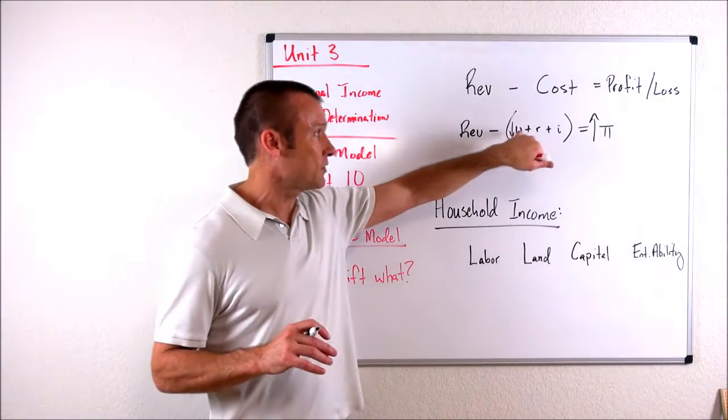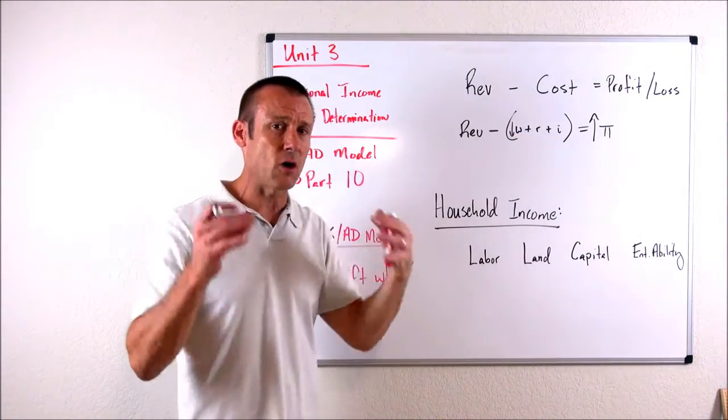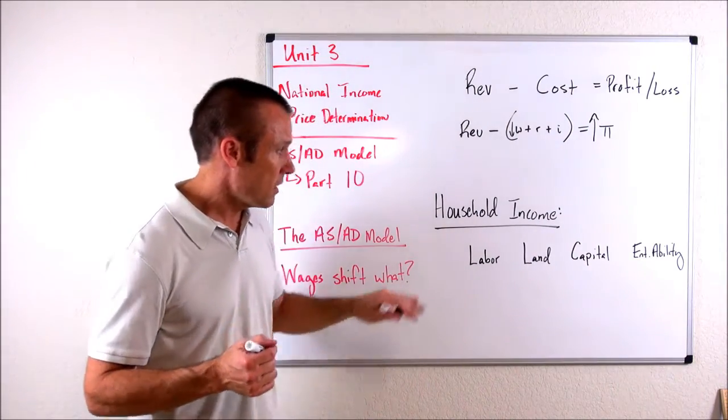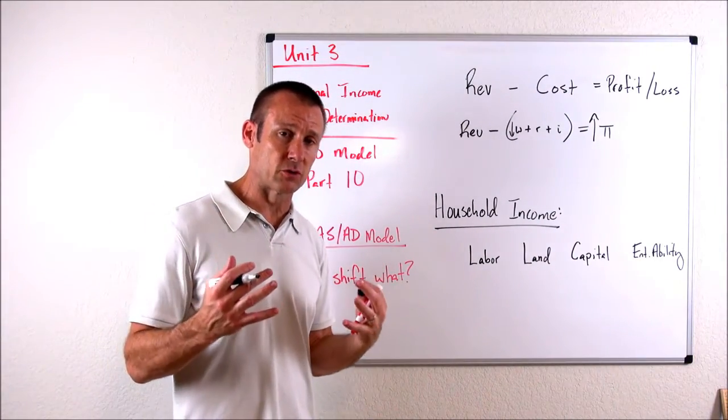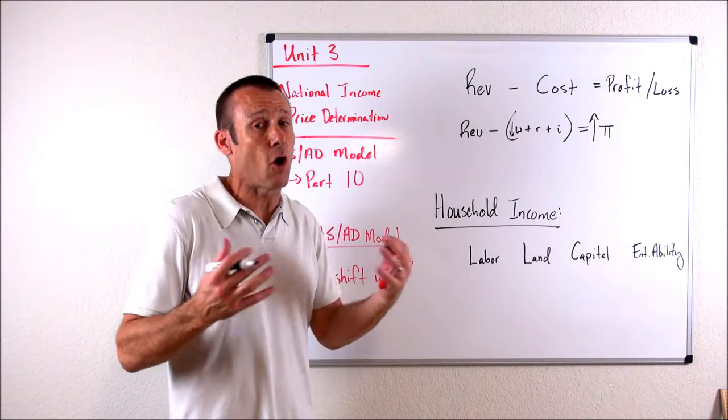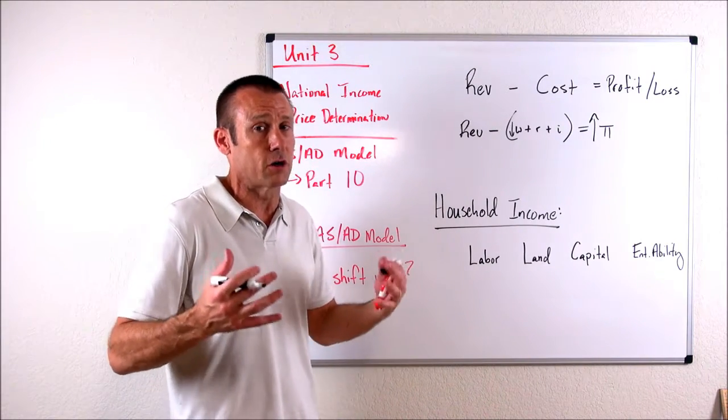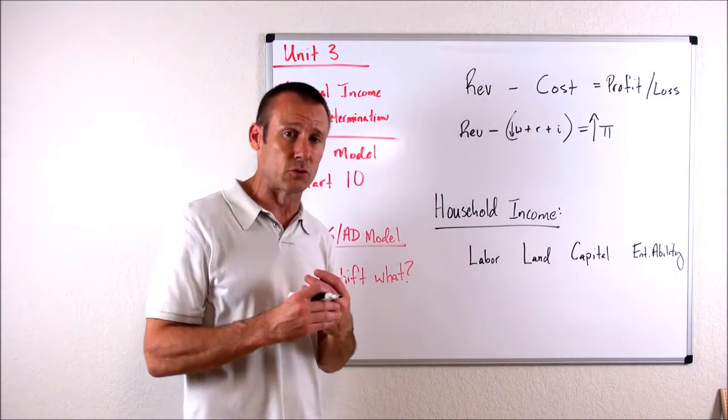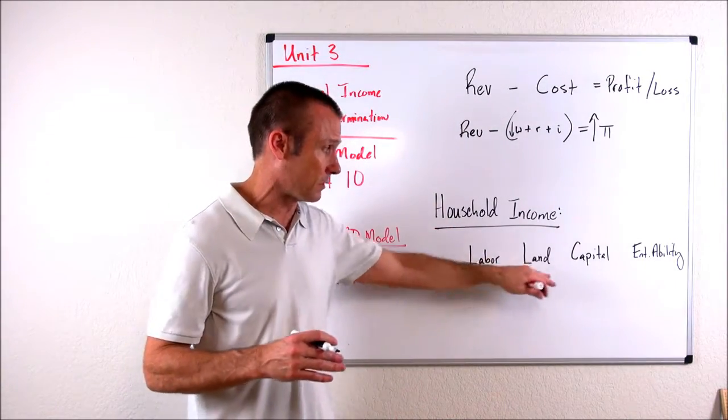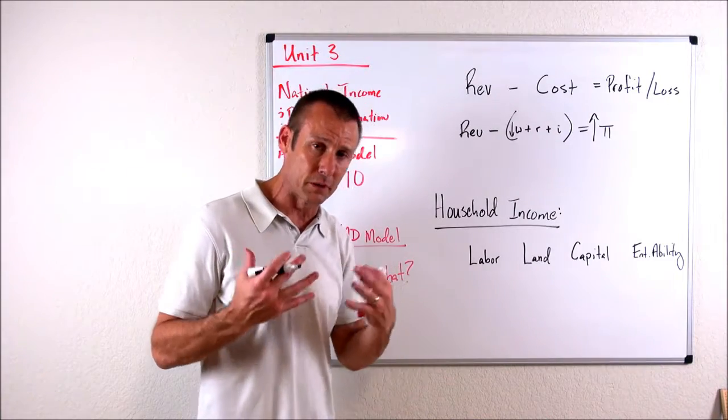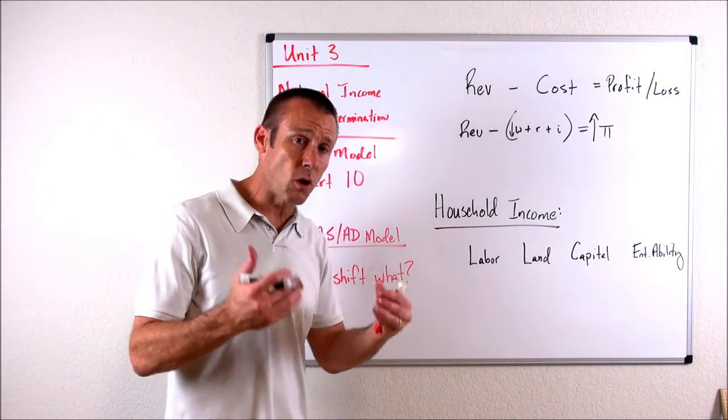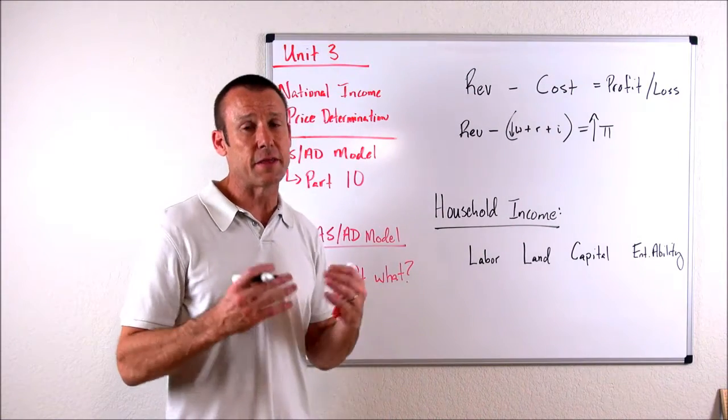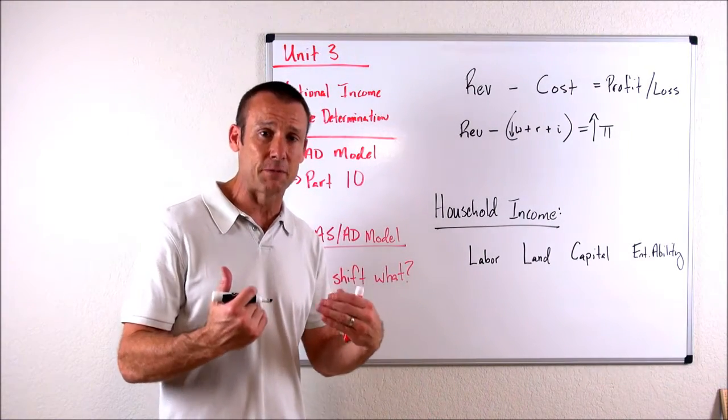But if we just have a change in wages, how should I think about that with household income? Well, households provide four resources to the resource market - they provide all the resources there are, because there are just four types of resources: labor, land, capital, and entrepreneurial ability.